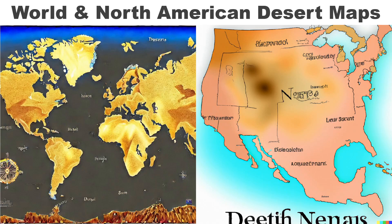These two maps show world and North American deserts. The world map uses a great symbology for deserts, and it looks like almost all lands are deserts. My favorite thing on the world map are the beautiful compass and how awesome the AI made Antarctica look. The North American map on the right appears to show a big central desert area, perhaps. Mostly I like how much it distorted the continent, with most of Canada cut off.